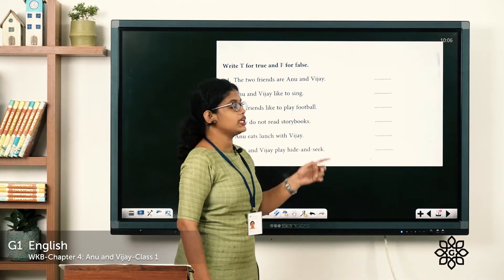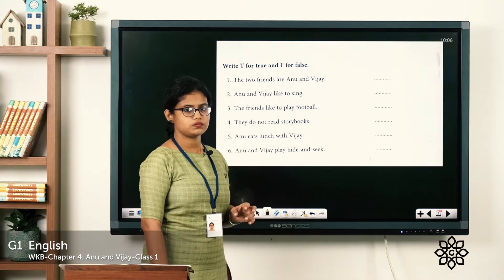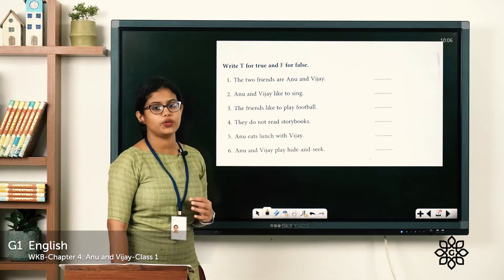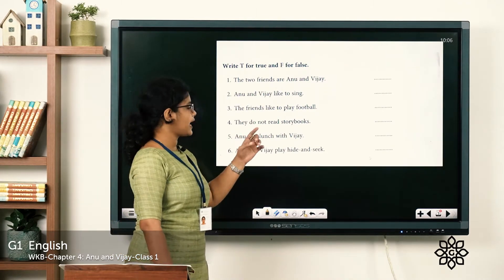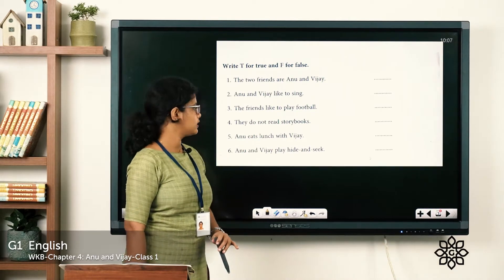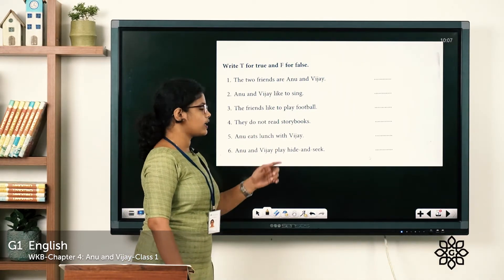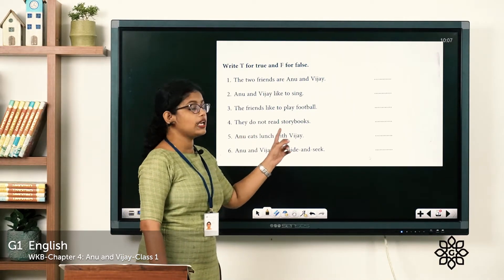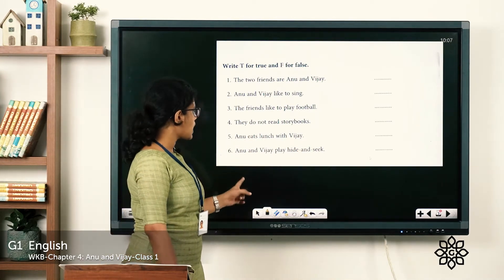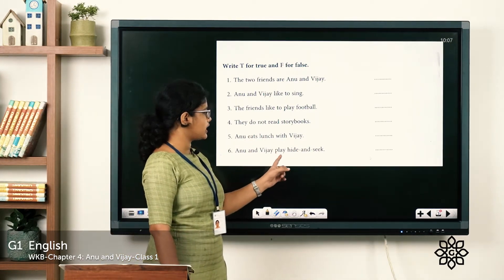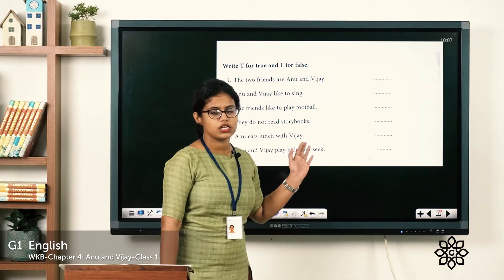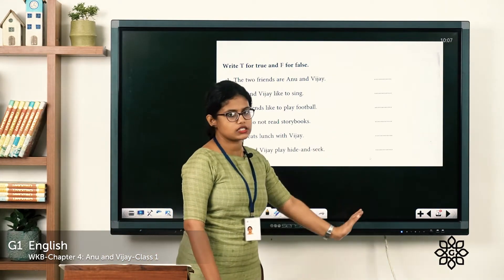Third one: 'The friends like to play football.' The next one: 'They do not read storybooks.' Fifth one: 'Anu eats lunch with Vijay.' See the sixth one: 'Anu and Vijay play hide and seek.' These are the questions. I hope you have written the answers here.